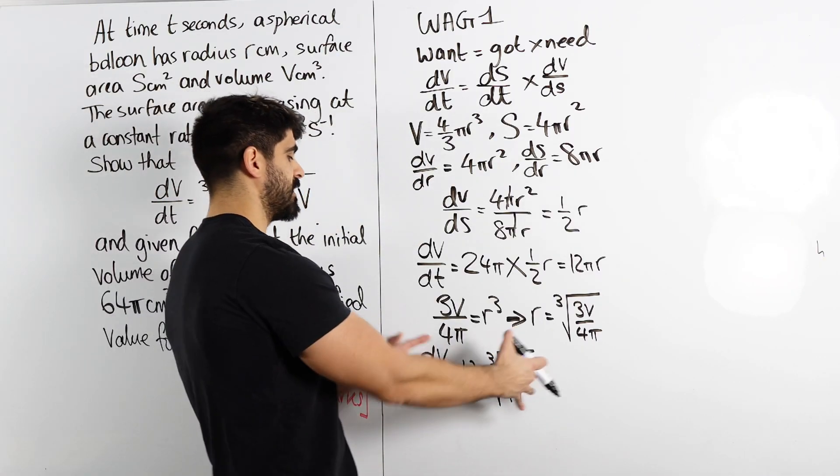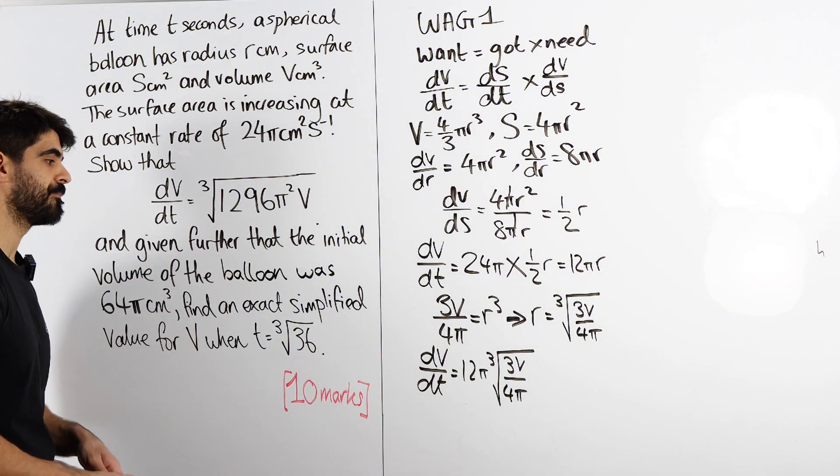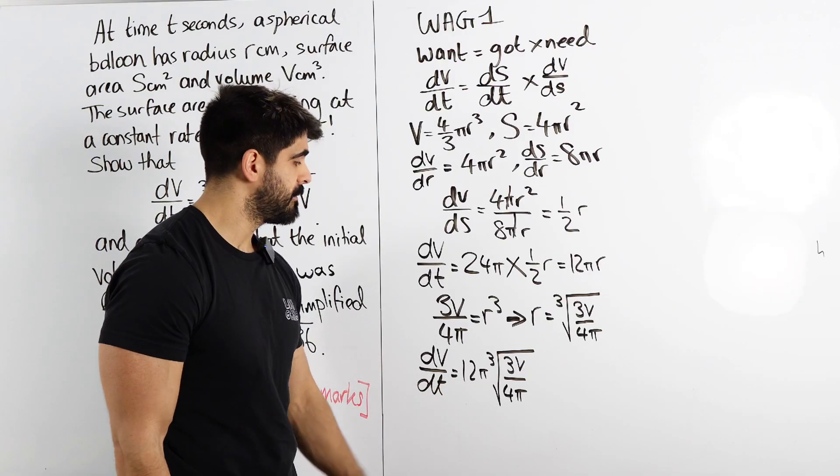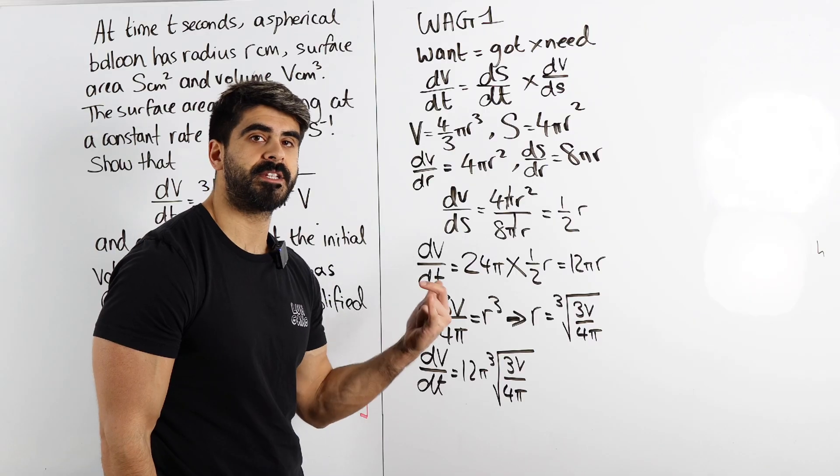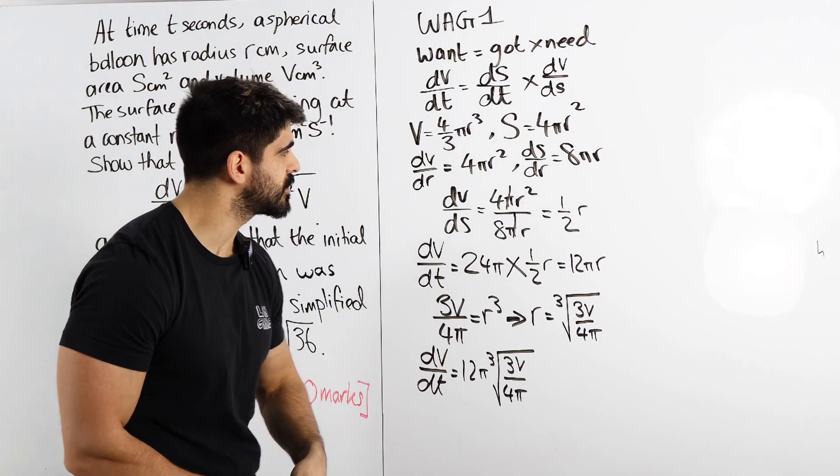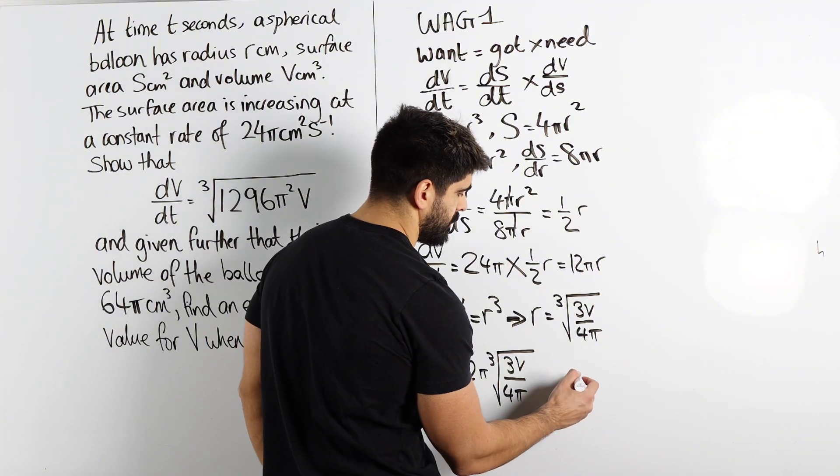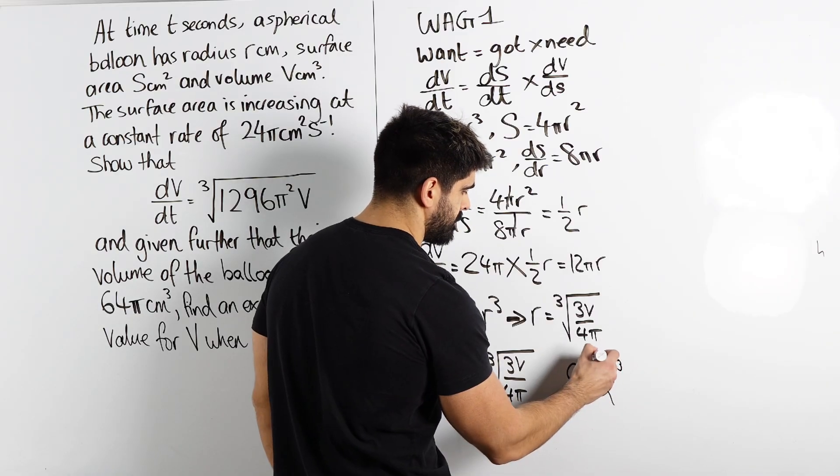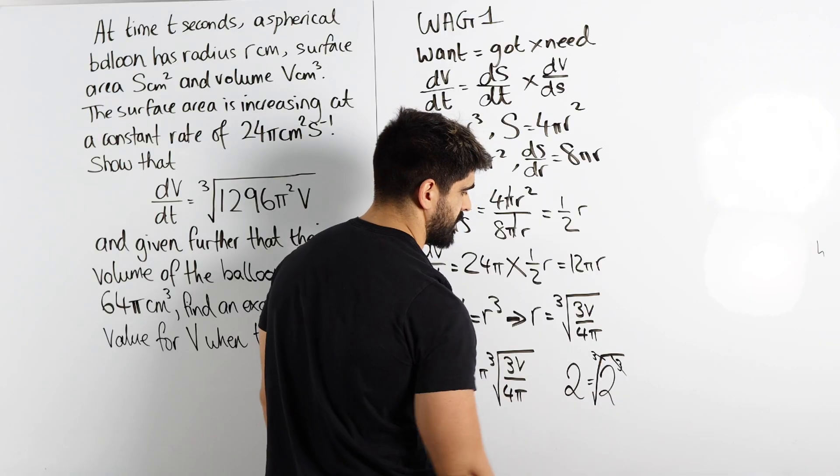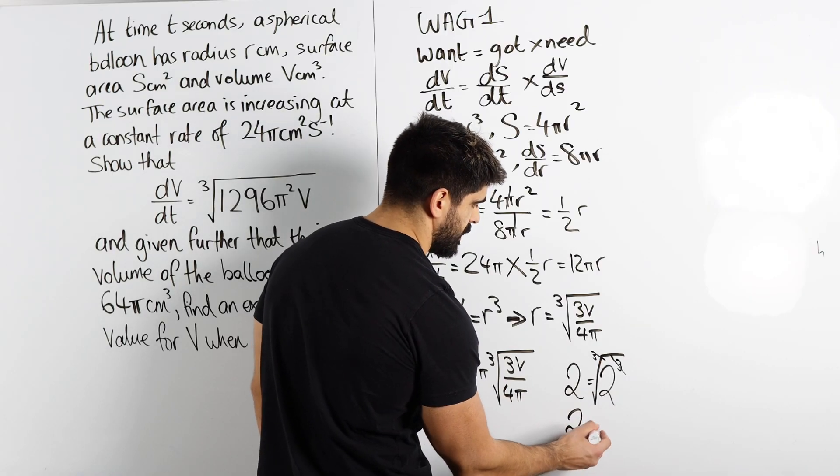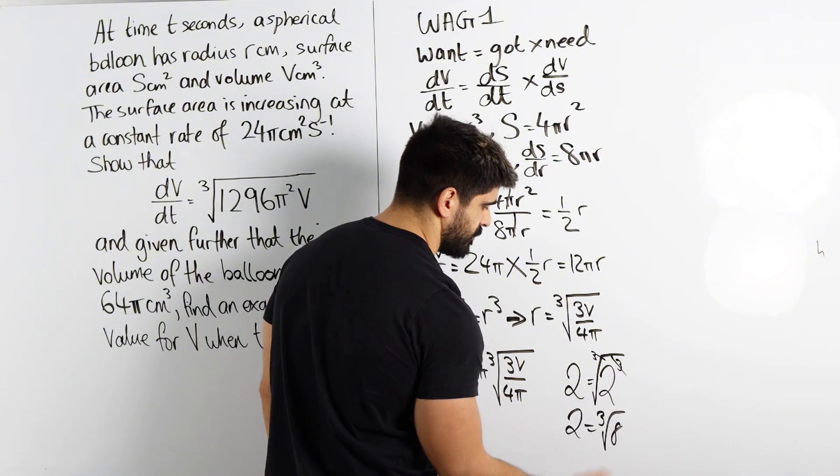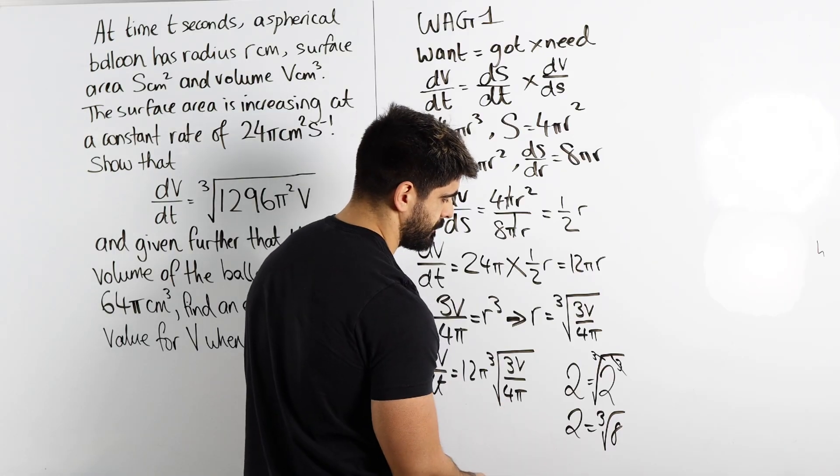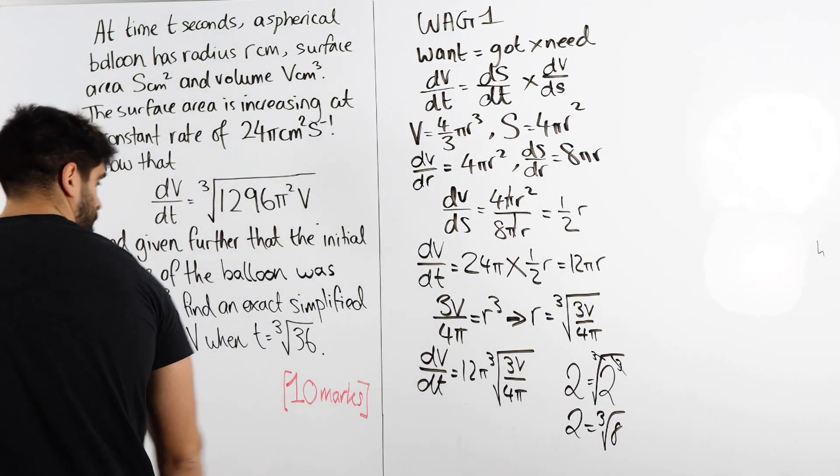So we get dv by dt is 12π multiplied by the cube root of 3v over 4π. Alright, so how do we somehow bring this all into one cube root? Because that's what they want. Well, you can rewrite this as a cube root by cubing them. Because if you cube this and then put a cube root around it, the cube cancels the cube root. For example, if I take 2, I can literally write it as 2 cubed, but I just have to put a cube root around it, because then this cancels this. So you can literally say 2 is the cube root of 8. That's 2 cubed, isn't it? So if you want to rewrite a number with a cube root around it, just cube it. And that's done.